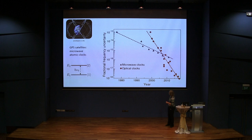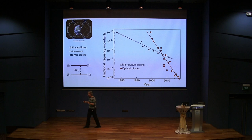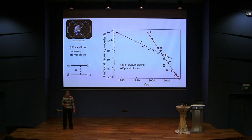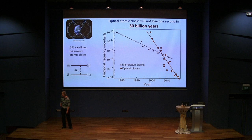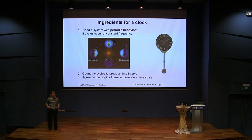Now we switch to a different spectral region — optical transitions — and you can see how fast the progress was. We are actually at the level of 18 significant figures in uncertainty of our clock. That's just such a small number, it's kind of hard to imagine. To put it in perspective: this clock will not lose one second in more than a lifetime of the universe — in 30 billion years. Those are extraordinarily precise devices.